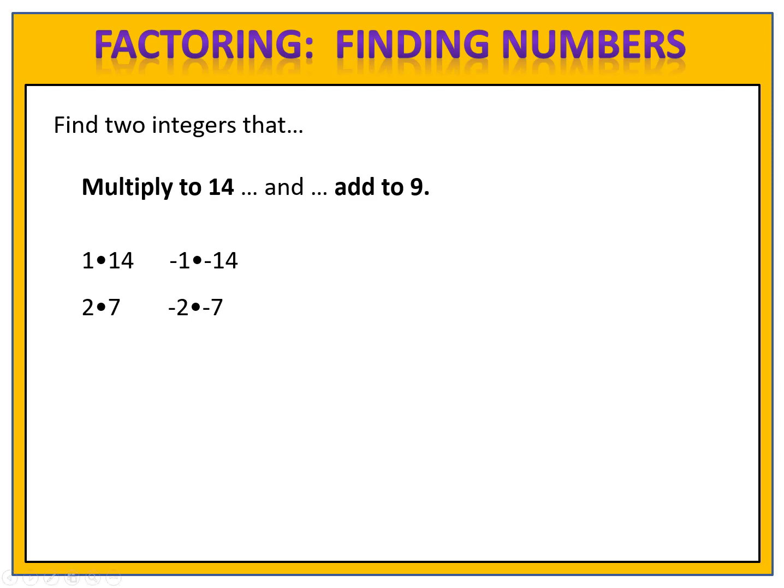Now if you're looking for a calculator strategy, let me show you one. We want numbers that multiply to 14, so x times y equals 14. If we solve for y, we divide both sides by x and we have y equals 14 divided by x. That equation is exactly what can help us.